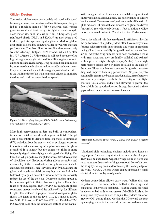Glider Design. The earlier gliders were made mainly of wood with metal fastenings, stays, and control cables. Subsequent designs led to a fuselage made of fabric-covered steel tubing glued to wood and fabric wings for lightness and strength. New materials, such as carbon fiber, fiberglass, glass-reinforced plastic (GRP), and Kevlar are now being used to develop stronger and lighter gliders.